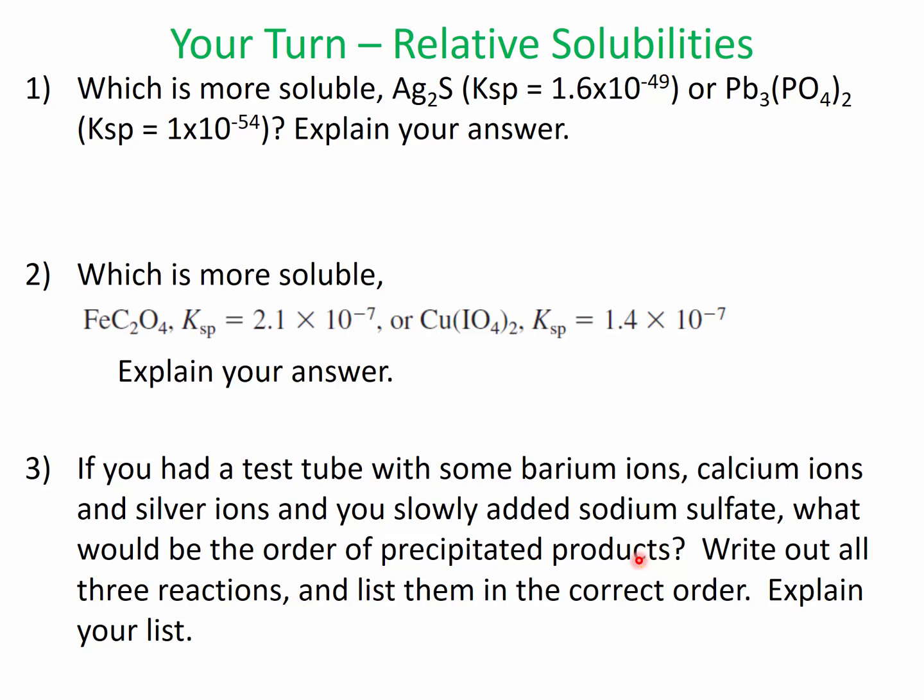So if you need help with this, I would re-watch the very beginning when I was drawing those two beakers and describing what Ksp means. And you're going to need your appendix to solve this, because I didn't list the Ksps of the things that you need. So you're going to need that appendix D, and then find the Ksp of the different precipitates that would form from these. So let's see what you come up with on that.